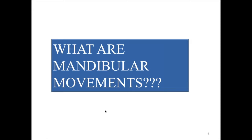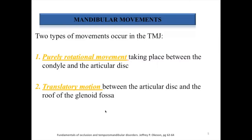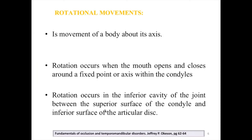There are two types of mandibular movements: pure rotational movements and translatory motion. In pure rotation, movement takes place between the condyle and the articular disc, whereas in translatory motion it occurs between the articular disc and the roof of the glenoid fossa. Rotational movement is the movement of the body around its axis, occurring when the mouth opens and closes around a fixed point within the condyle, in the inferior cavity of the joint.